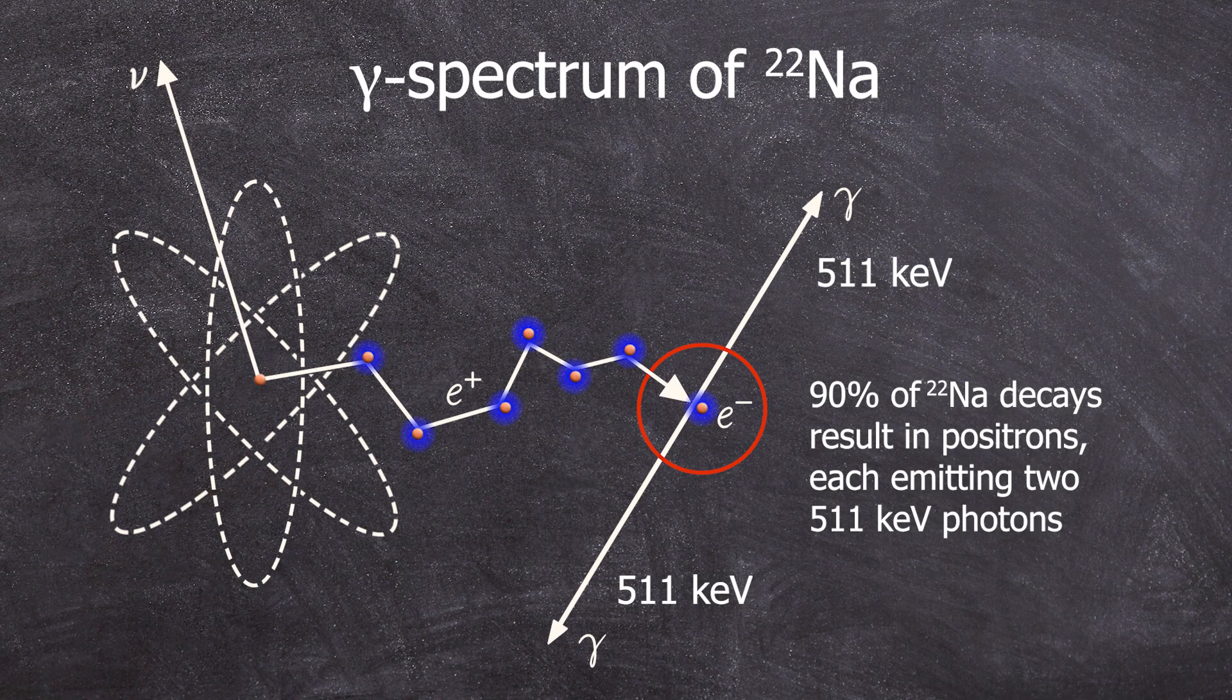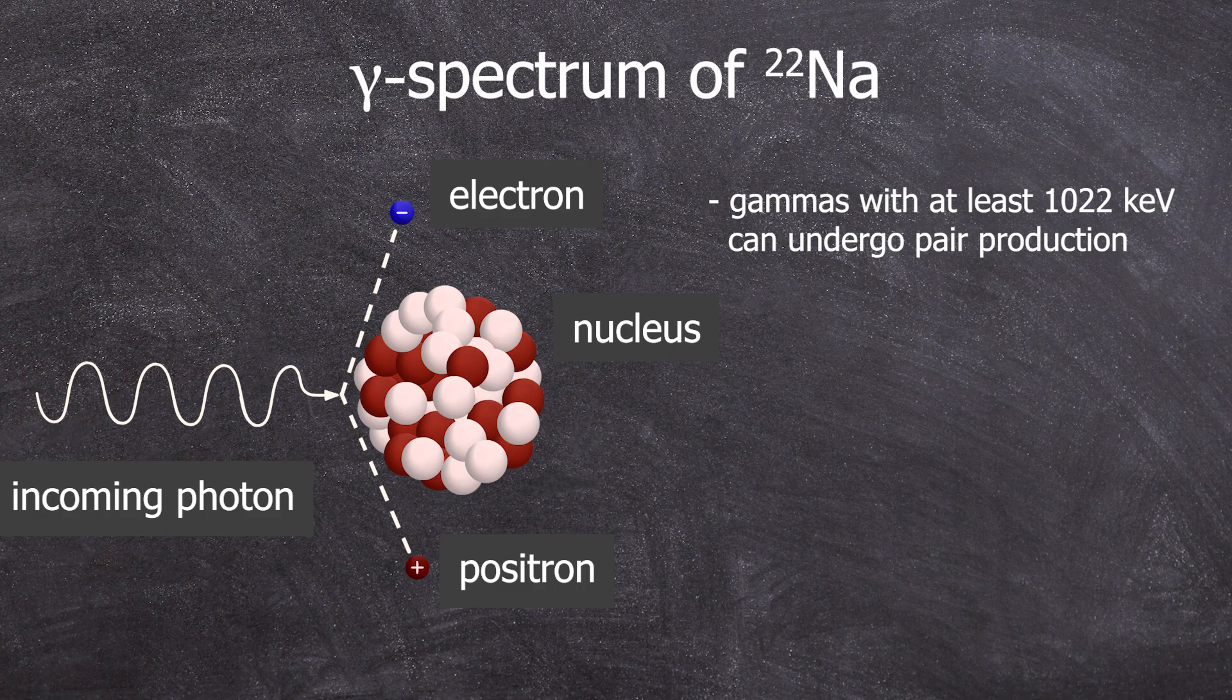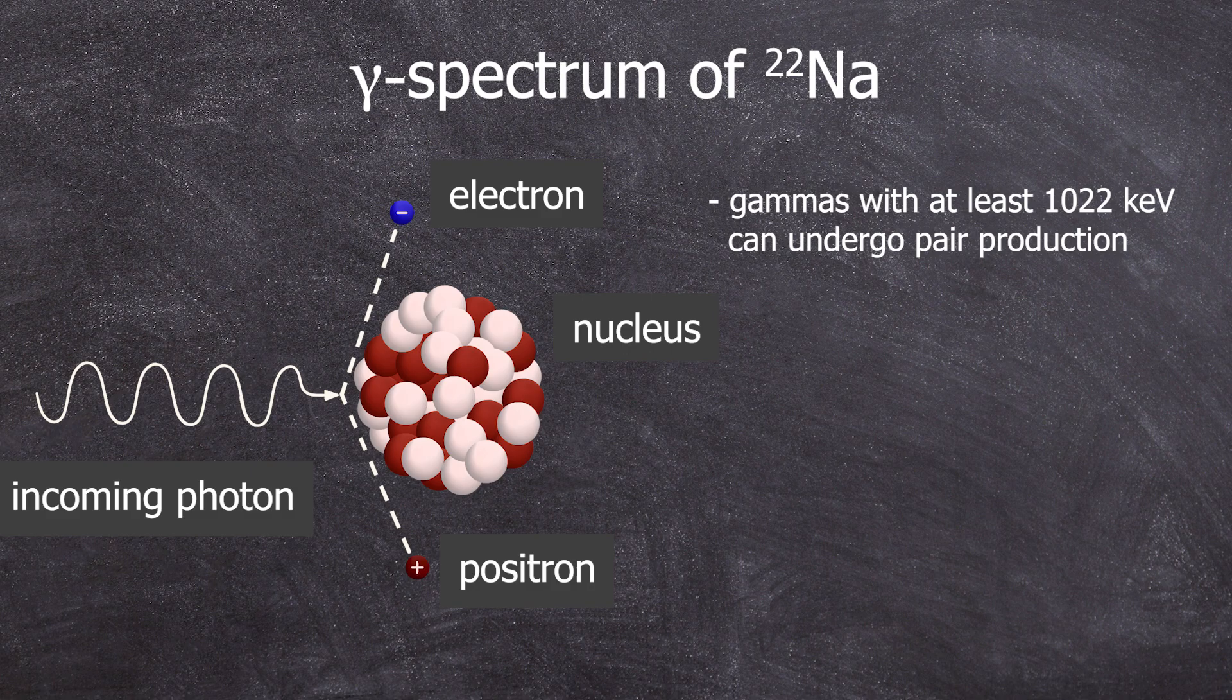In addition, the 1,274 line itself is energetically high enough to undergo pair production. With more than 1,022 keV of energy, it can produce within the detector, when it comes near to an atomic nucleus.